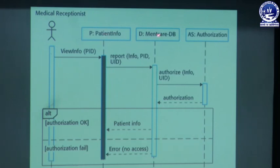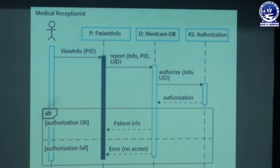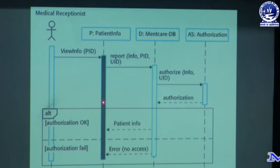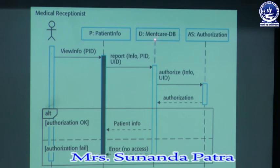The three objects are patient information, main care database, and authorization; the actor is the medical receptionist. The vertical lines show the timing — how long each object is active. The medical receptionist is active from beginning to end, but the authorization object is only active when she tries to retrieve data from the main care system. If valid, patient information goes back to the receptionist; if invalid, a no-access and authorization-fail message is returned. This is the sequence diagram of view patient information from the main care database. In our next class, we will discuss the structural diagram and how to represent a system model with it. Thank you.